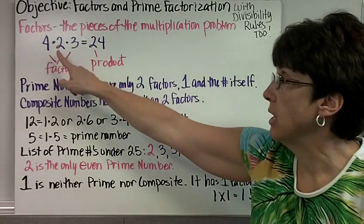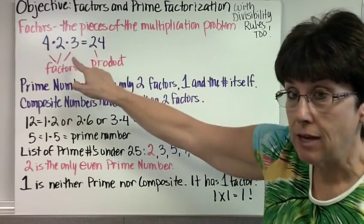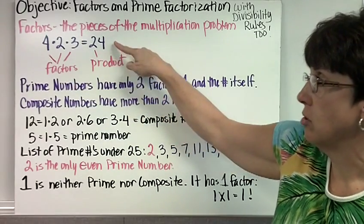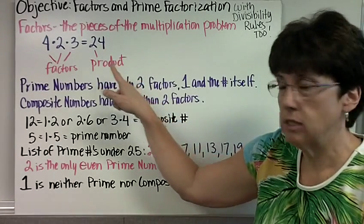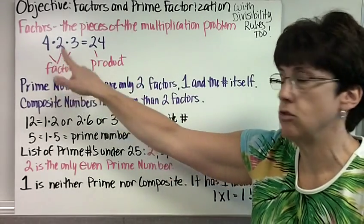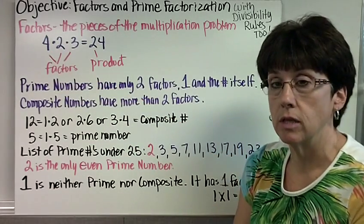So if I were multiplying 4 times 2 times 3, those are my factors. My answer, product, is 24. So we've talked a lot about product, but we haven't talked a lot about factors, so you need to know the terms. The pieces of the multiplication problem are called the factors.